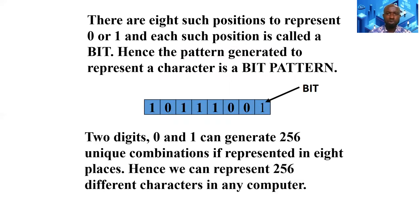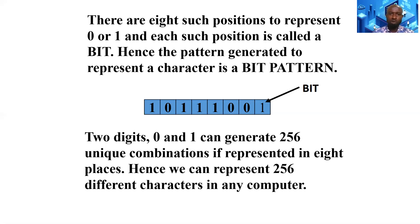A series of zeros and ones form a pattern, and such a pattern becomes a character. There are eight such positions to represent these characters using zeros and ones. When you have one such position, it is called a bit — the smallest form of representing data. When you have eight bits, it becomes a byte. So a combination of eight bits gives us one byte.